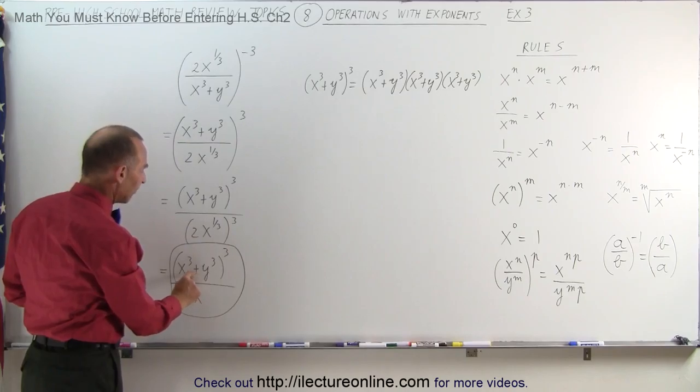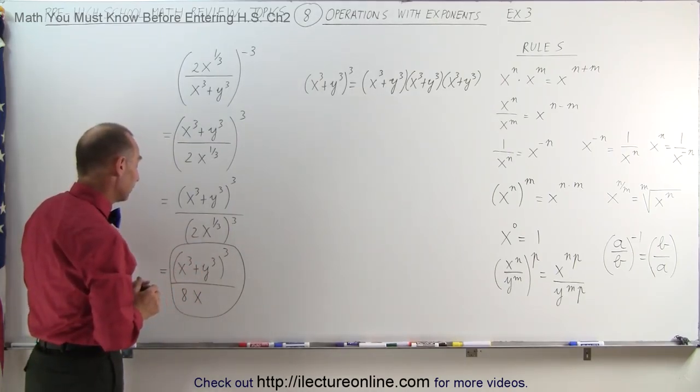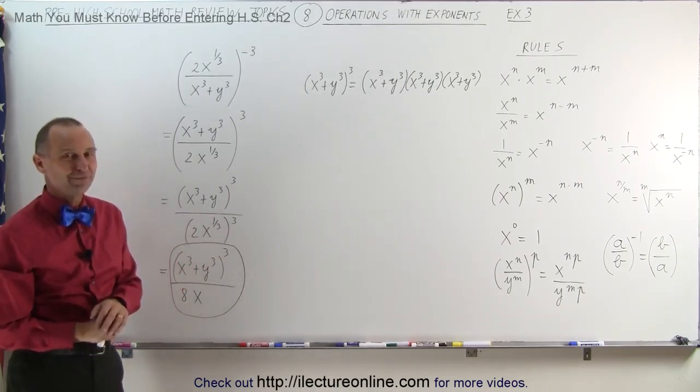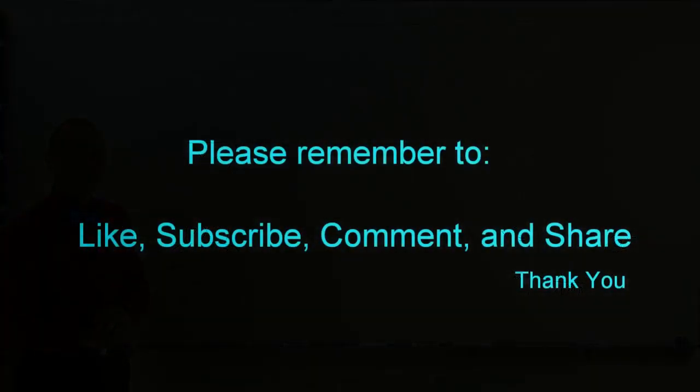So this would then be the final form of the expression above. Again, in order to be able to divide this in there, you'd have to have an x cubed times y cubed. Then it would work. But since it's plus y cubed, you just want to leave it just as it is. And that's how it's done.